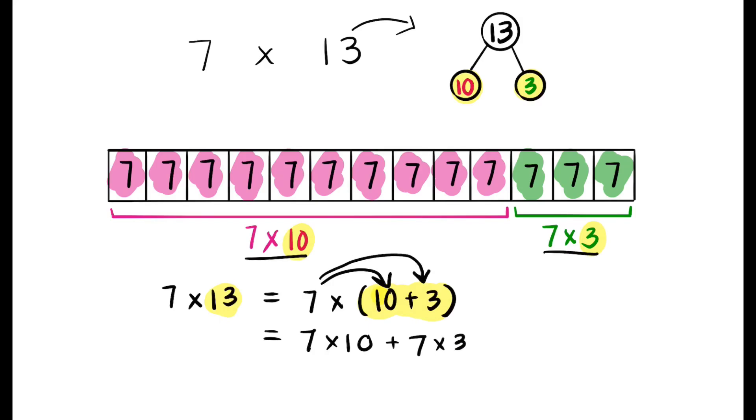Now we have two simple multiplication problems. We know that 7 times 10 equals 70. We also can see that on our tape diagram, and 7 times 3 equals 21, which we can also see on our tape diagram. And we know if we add 70 plus 21 we get 91. 7 times 13 equals 91.